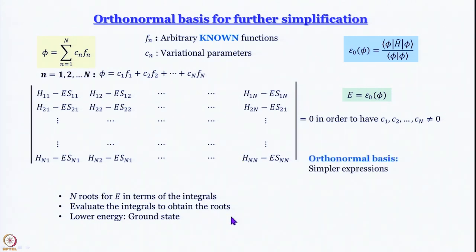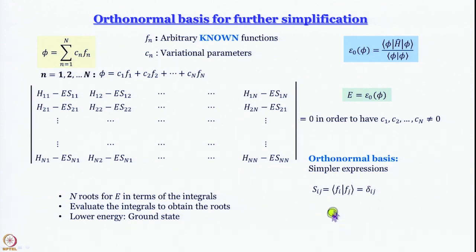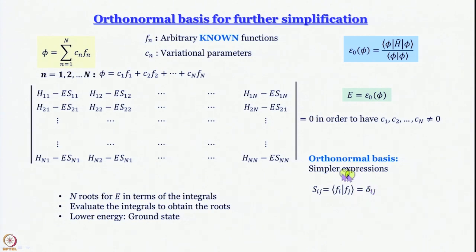When we use an orthonormal basis, expressions simplify because S_ij = ∫fᵢ*fⱼ dτ = δᵢⱼ. When i = j, this equals 1 provided the functions are normalized; when i ≠ j, it equals 0 since they are orthogonal.